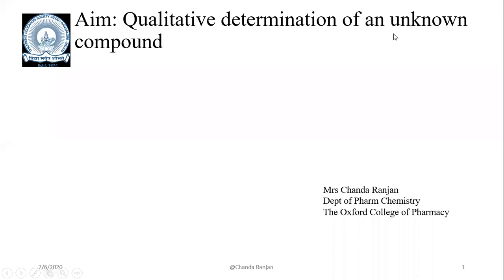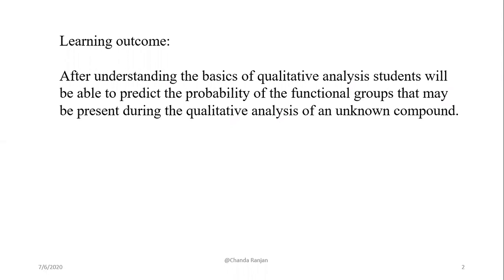Hello students. Today the topic of discussion is qualitative determination of an unknown compound. We have a different unknown compound and we will learn here how to proceed so that we can identify which functional group or compound it is. The learning outcome is: after understanding the basics of qualitative analysis, you will be able to predict the probability of the functional group that may be present, and after the confirmatory test you can also tell which actual compound it is.